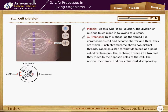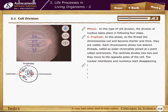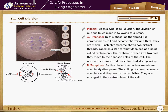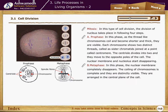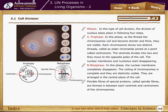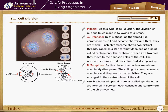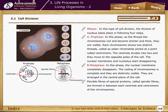The nuclear membrane and nucleolus start disappearing. In metaphase, the nuclear membrane completely disappears, the coiling of chromosomes is complete and they are distinctly visible, arranged in the central plane of the cell. Flexible fibers of special proteins called spindle fibers are formed between each centriole and the centromere of the chromosomes.